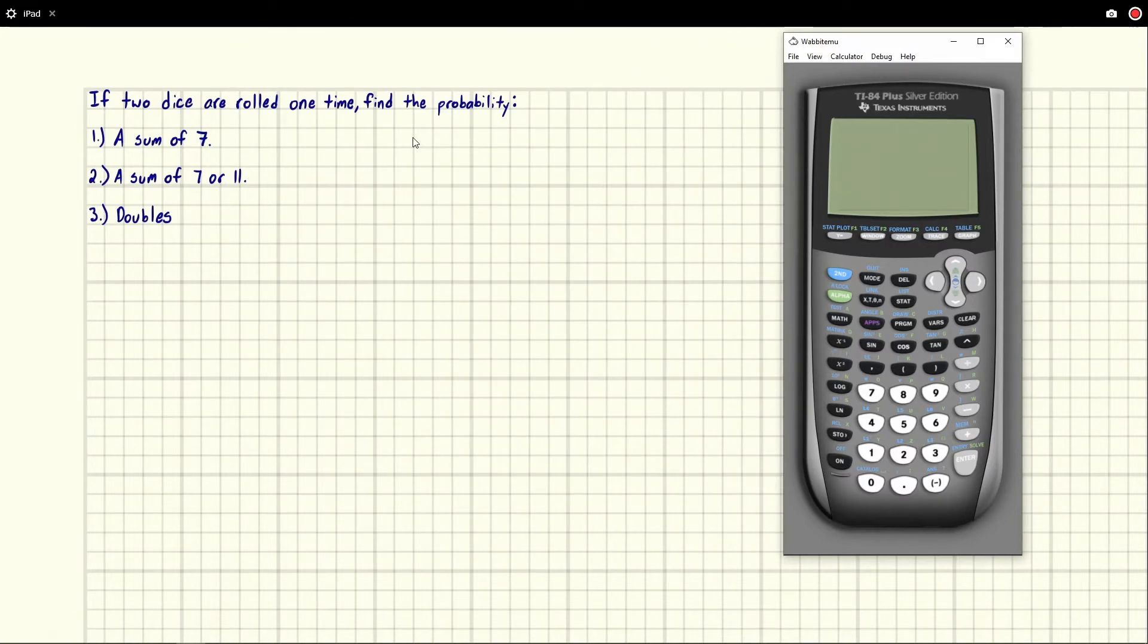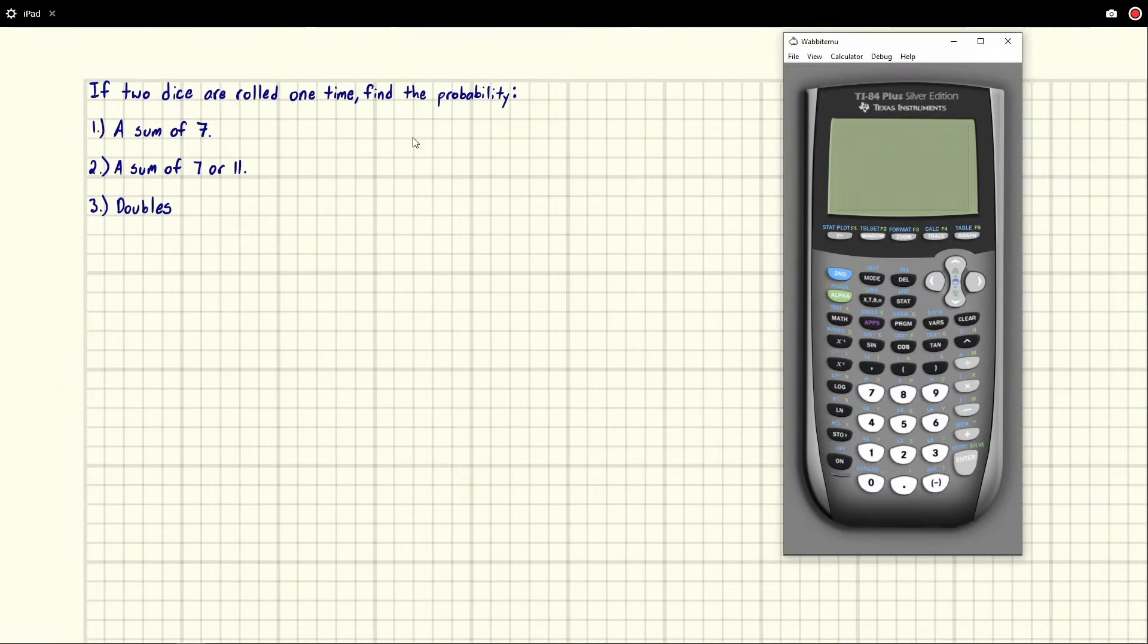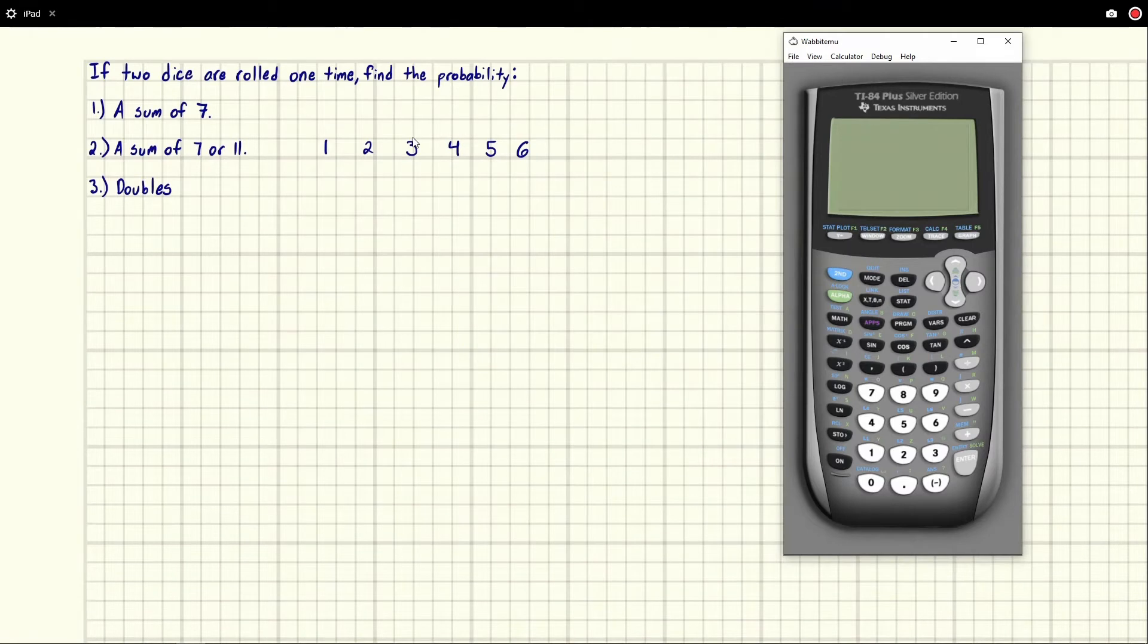Alright, so for these two dice problems I highly recommend making this chart. It's going to make your life a lot easier. If you can think it out in your head that's great, but I think for most people the chart will be quite useful. So we know that our dice can be rolled so that we can get a one on the dice, a two, now I'm going to give myself a little more room, a two, a three, a four, a five, and a six.